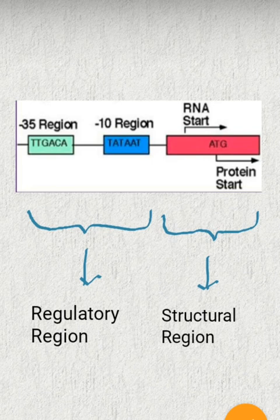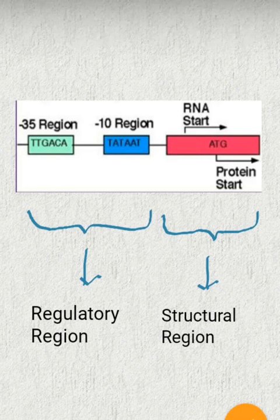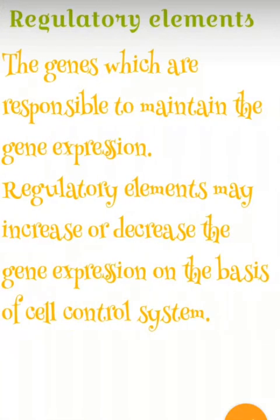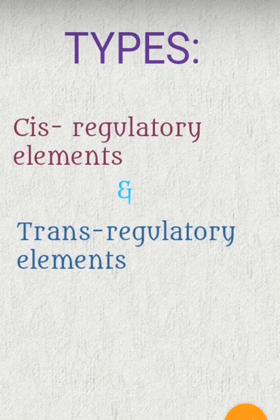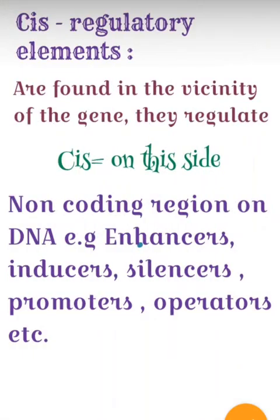The regulatory region basically lies upstream of the structural region. We denote a gene from the five prime region to the three prime region, so you can say the regulatory region lies towards the five prime region, or upstream, of the structural region. Regulatory elements are of two types: cis regulatory elements and trans regulatory elements.